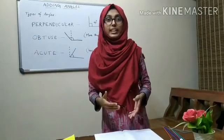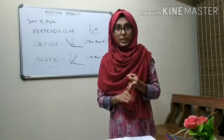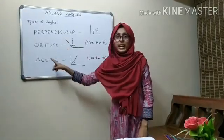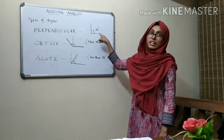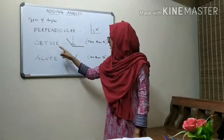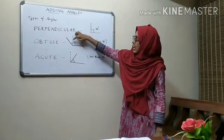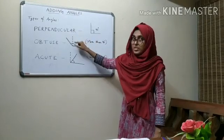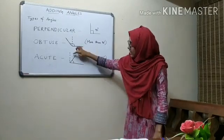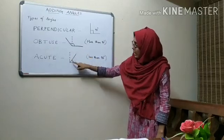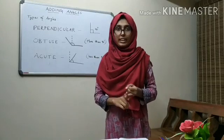Now we are going to study about different types of angles. There are three different types of angles — they are perpendicular angle, obtuse angle, and acute angle. In the perpendicular angle, we call it perpendicular when two lines meet and the angle between them is 90 degrees. In the case of obtuse angle, the angle is more than 90 degrees. In the case of acute angle, the angle is less than 90 degrees. So these are the three types of angles: perpendicular, acute, and obtuse.